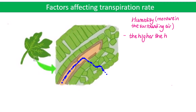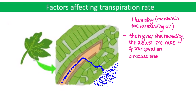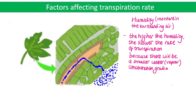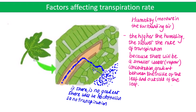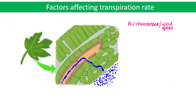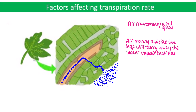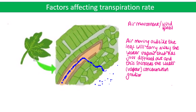The higher the humidity, the slower the rate of transpiration, because there will be a smaller water vapor gradient between the inside of the leaf and the outside of the leaf — and if there's no gradient there will be no diffusion, so no transpiration. Air moving outside of the leaf will carry away the water vapor that has just diffused out, and this increases the water vapor concentration gradient, therefore increasing the rate of transpiration.